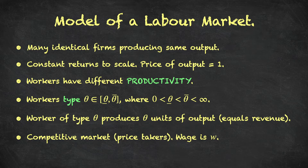We're going to assume that workers have different productivity levels, referred to as a worker's type. When we studied choice under uncertainty, we used the word 'state' to describe the world perfectly. In economics and game theory, when talking about an individual decision maker, we use 'type' instead. If we know the worker's type, we know everything relevant about that worker. The worker's type is a number theta, belonging to an interval from theta-underline to theta-overline, where theta-underline is less than theta-overline and both are positive and finite.